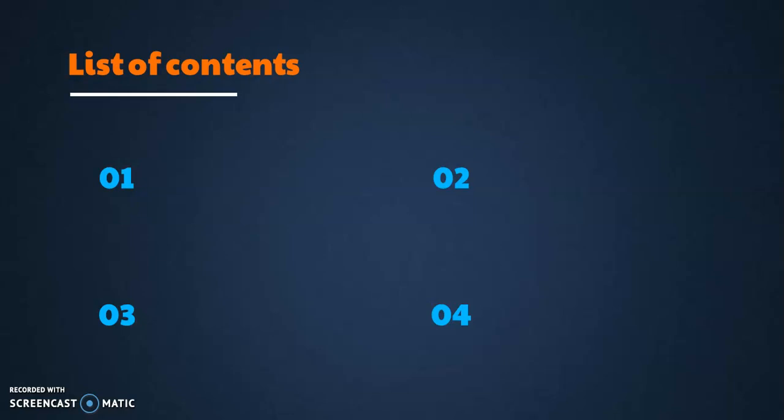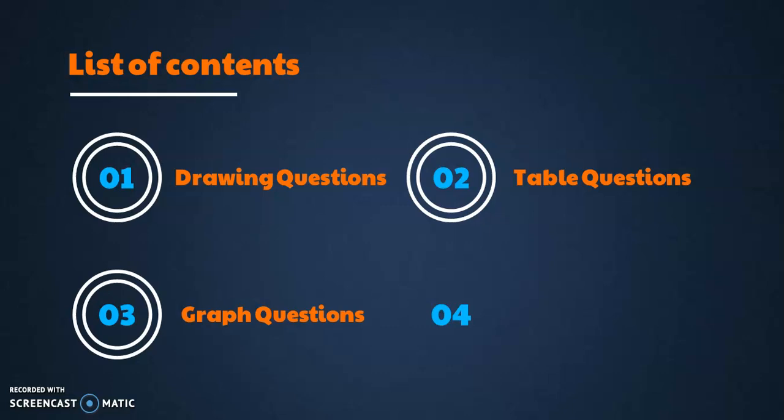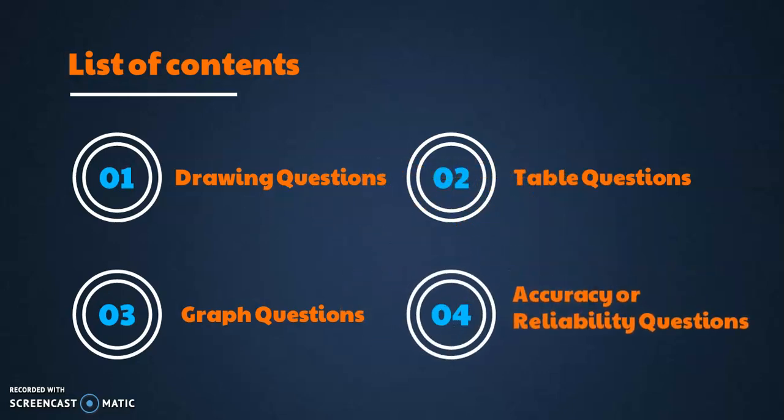There are four contents which will be discussed regarding preparation for Paper 6: Number 1, drawing questions; Number 2, table questions; Number 3, graph questions; and Number 4, accuracy or reliability questions. At the end, I'm going to share with you some more common questions that are actually asked in the paper and tips about them.